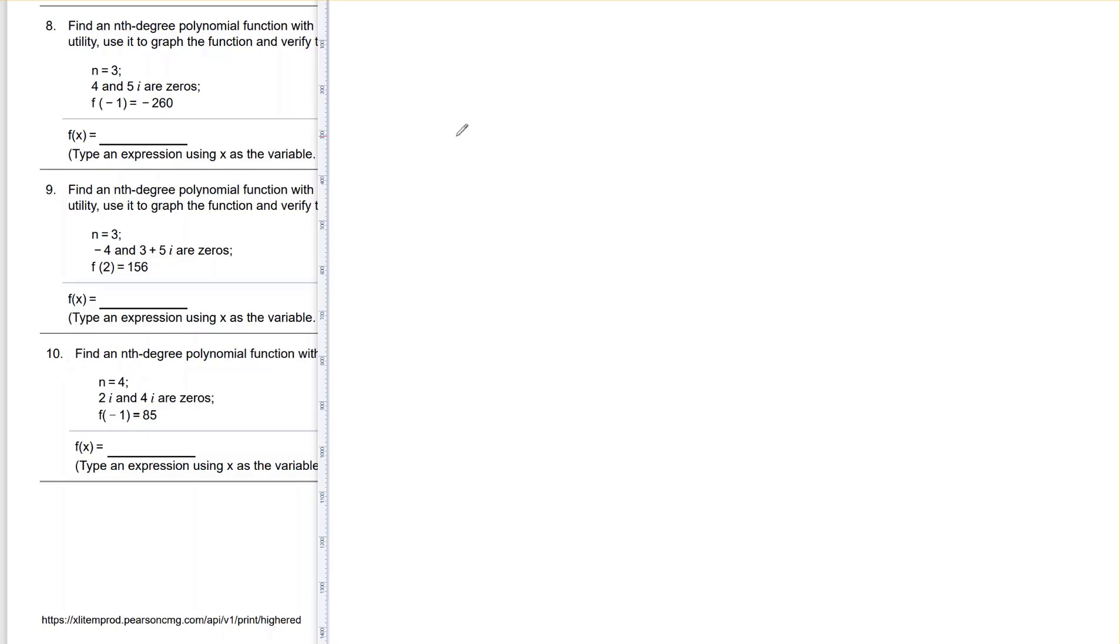Let's say that we know that the roots of a polynomial function are x equals negative 1, x equals 1, and x equals negative 2.